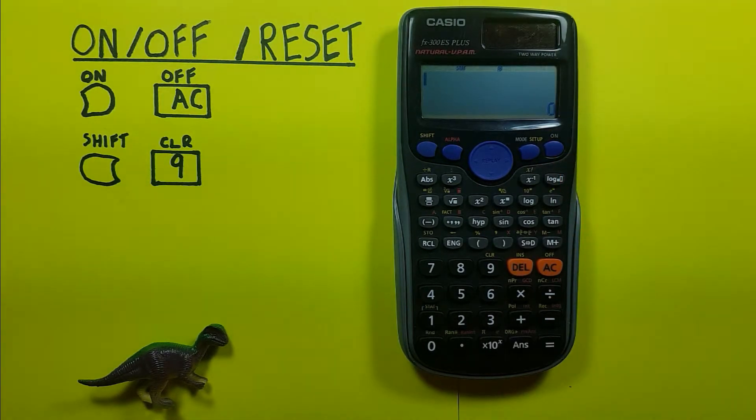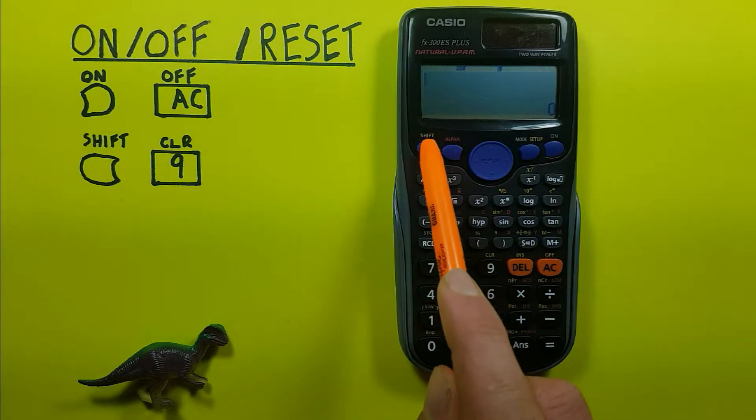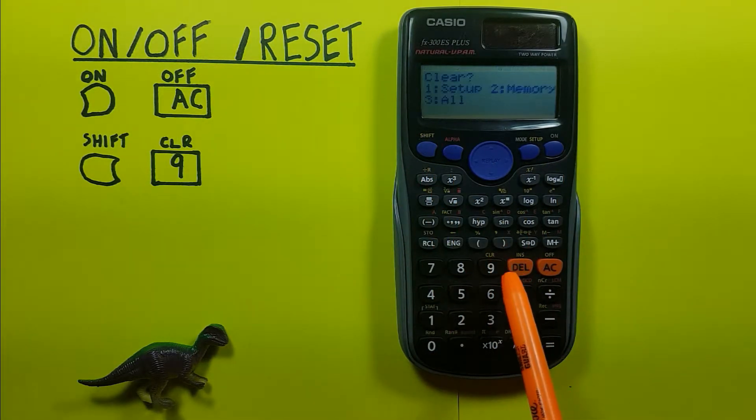Now what if we want to reset our calculator? To reset it we can press shift nine. That brings us to this menu here.